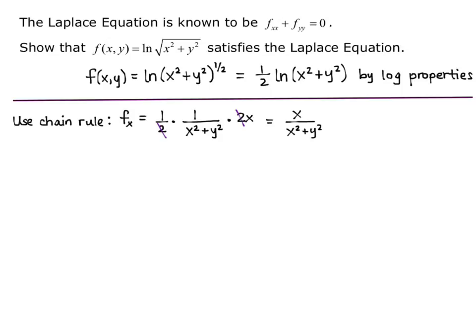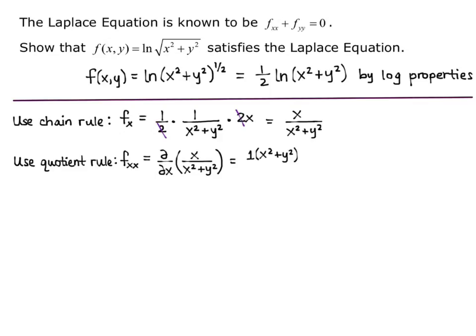To take the second derivative with respect to x, f sub xx, I have to use the quotient rule on x over x squared plus y squared. The derivative of the top is 1 times the bottom x squared plus y squared, minus the top x times the derivative of the denominator which is 2x, all divided by the denominator squared, x squared plus y squared quantity squared. Simplifying and combining like terms, I get y squared minus x squared over x squared plus y squared quantity squared.